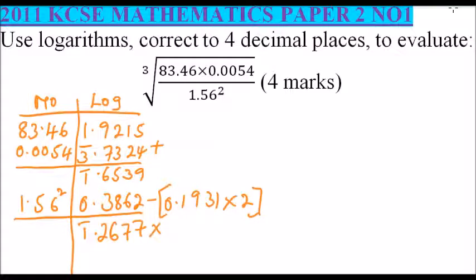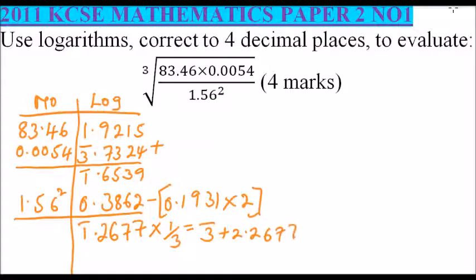To get the cube root, we divide by 3. Since we cannot divide bar one by 3 directly, we modify it so that we have bar 3 plus 2.2677. You divide this by 3 — bar 3 divided by 3 gives bar 1, and 2.2677 divided by 3 gives 0.7559.